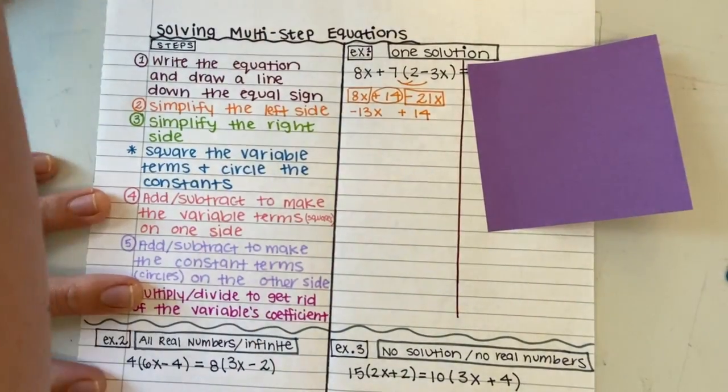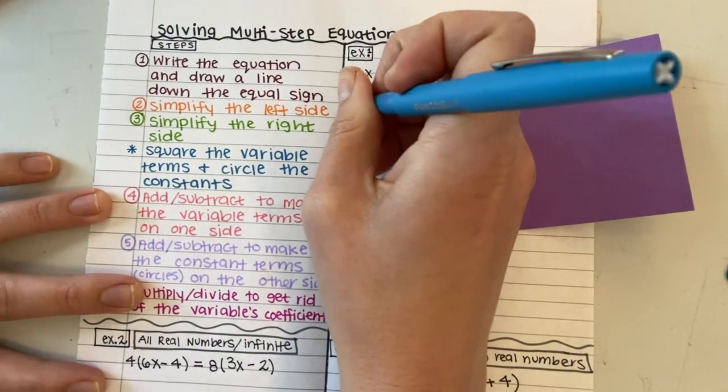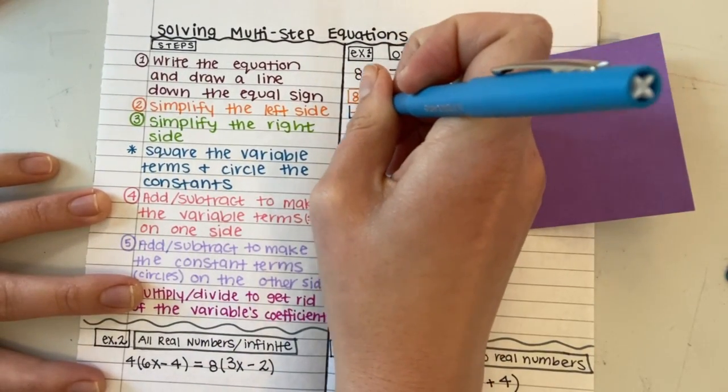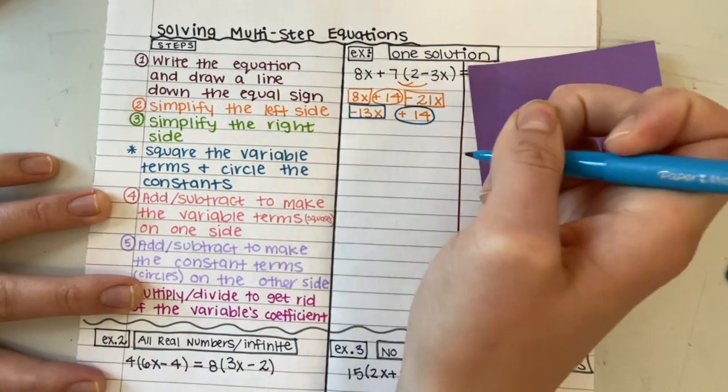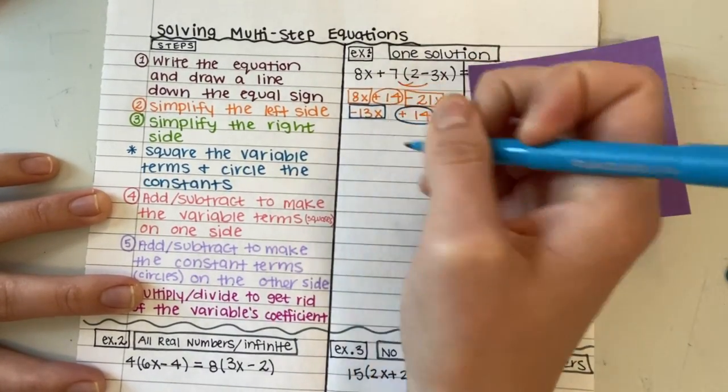Because once I am down to my variable term and a constant, then that's as simple as it can get, because those are unlike terms.